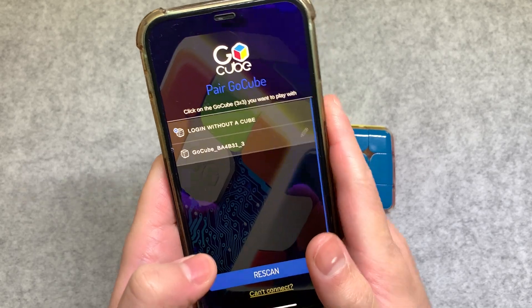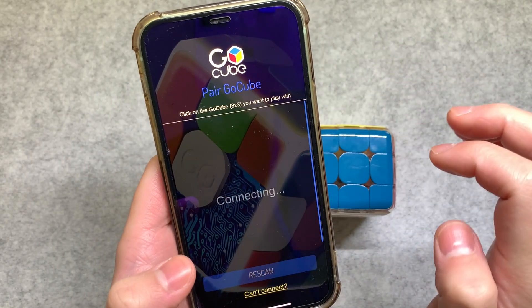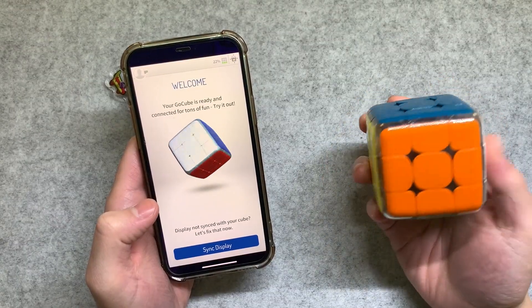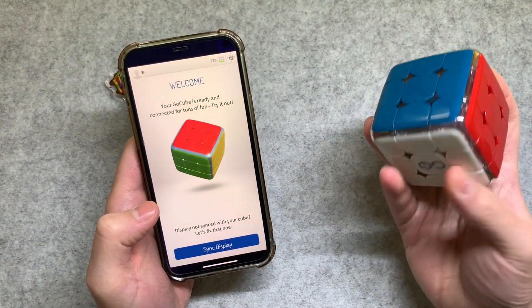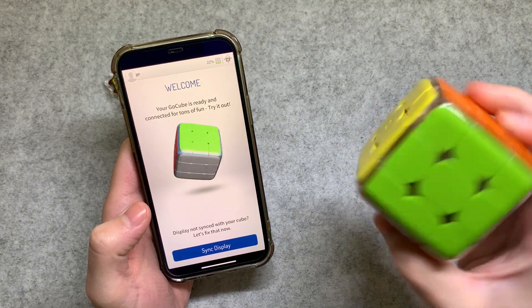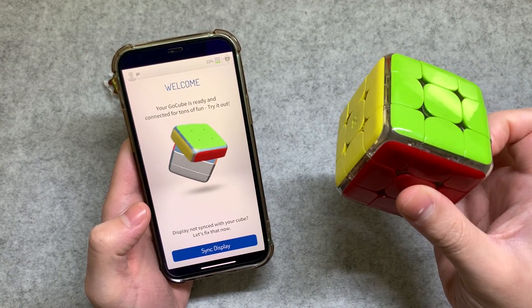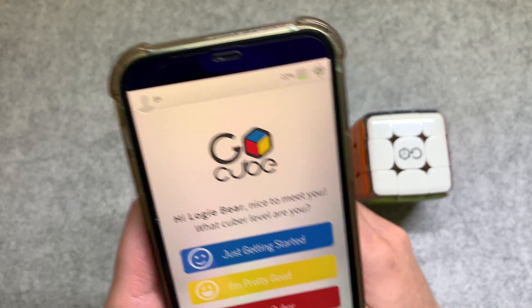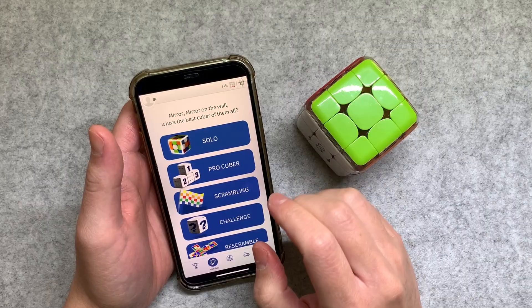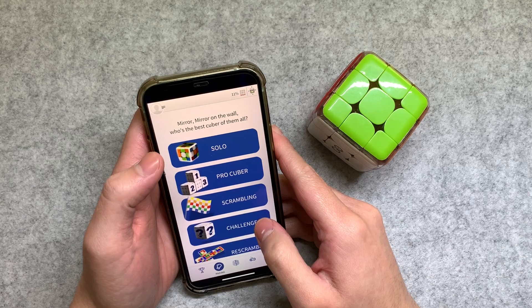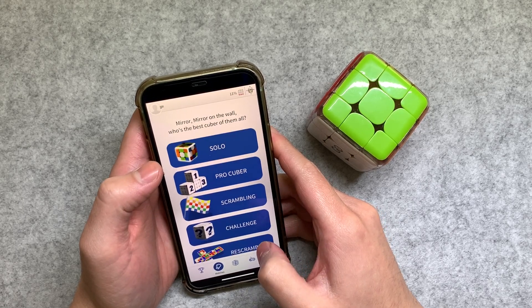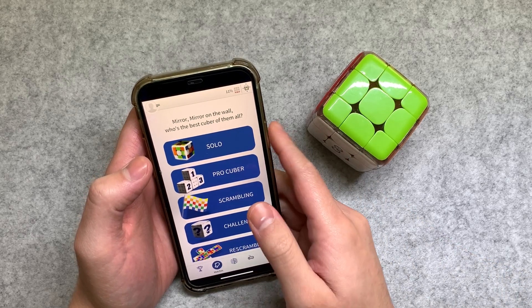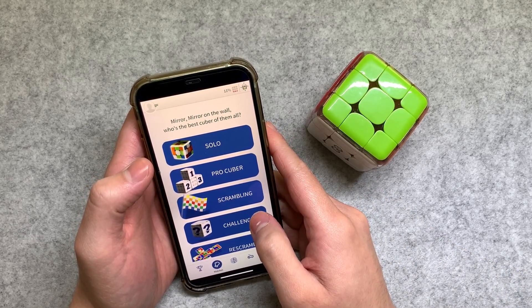There's definitely magnets in it as you can see there, and it actually corner cuts a bit as well. This moves a lot better than I thought it would, to be honest. I'm pleasantly surprised. You can actually speedcube with this, which makes sense. Now let's connect it to the app. The GoCube is right there and let's click this on. It's connecting.